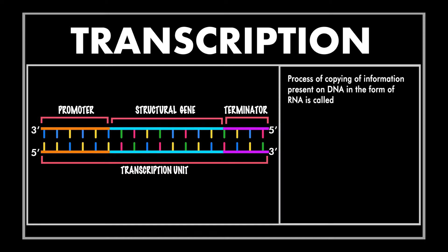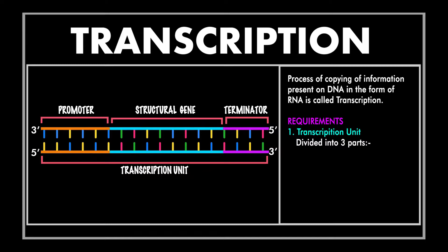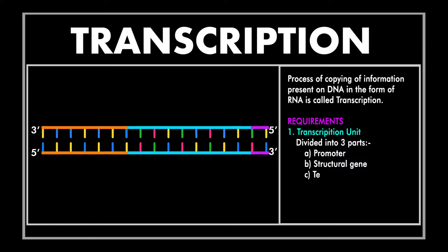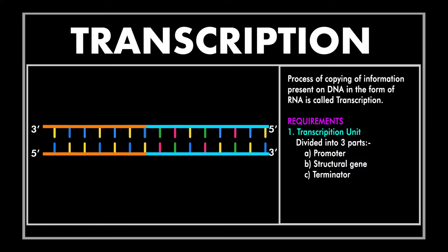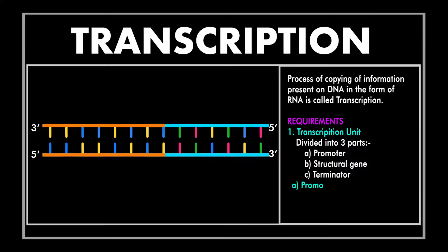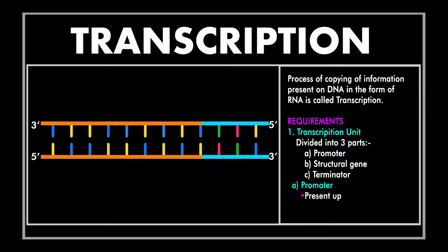For the formation of proteins, let's first see the requirements for transcription. The first requirement is the presence of a transcription unit, which is the segment of DNA involved in the process of transcription. This transcription unit is divided into three parts based on its role.